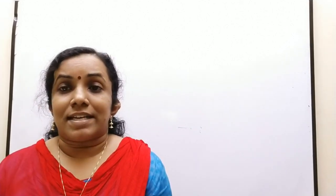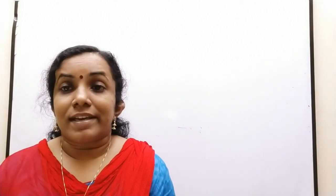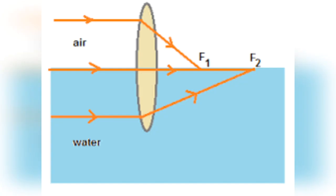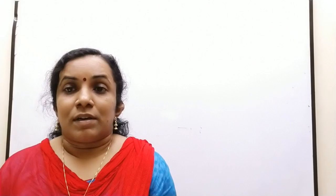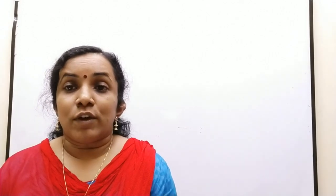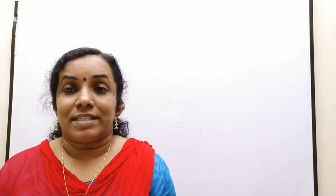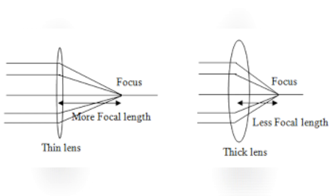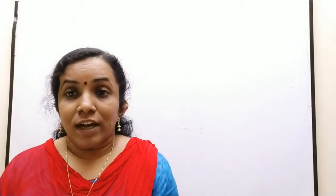If a given lens is placed in water instead of air, the focal length increases due to a decrease in refractive index. Similarly, a thick lens has less focal length due to smaller radii of curvature, meaning a thin lens has a greater focal length than a thick lens.